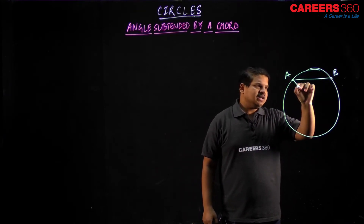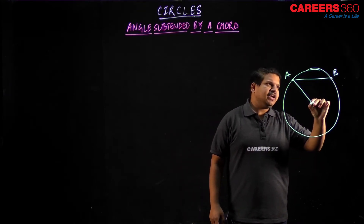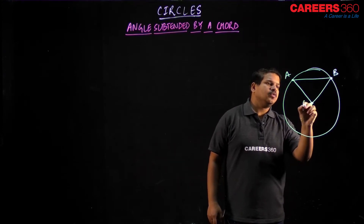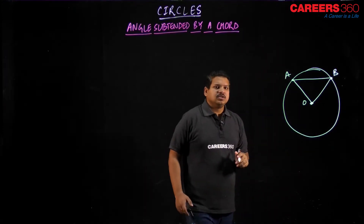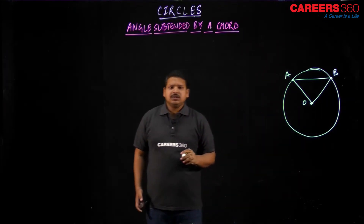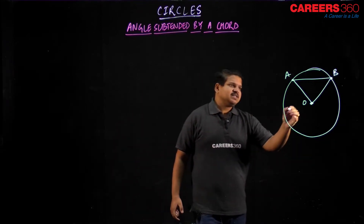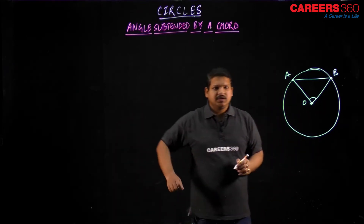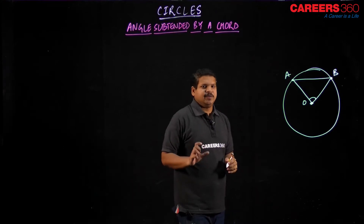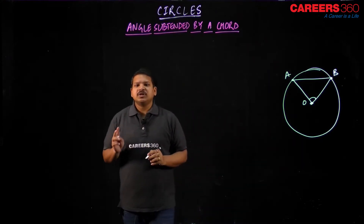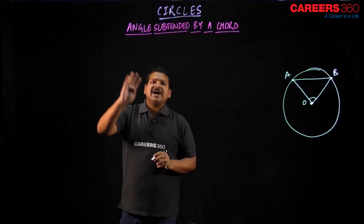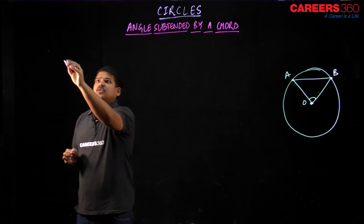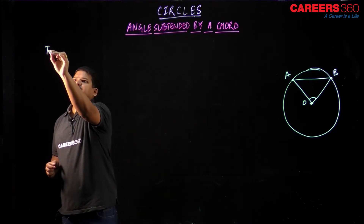What is happening right over here is that it is subtending an angle at the center O. So this is what the angle subtended by a chord is. There are two theorems regarding this angle subtended by a chord and let us have a look at those theorems firstly.